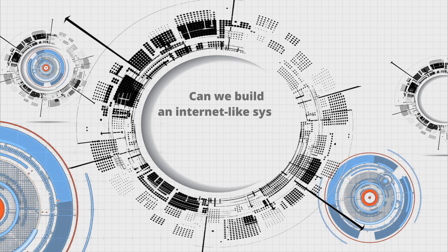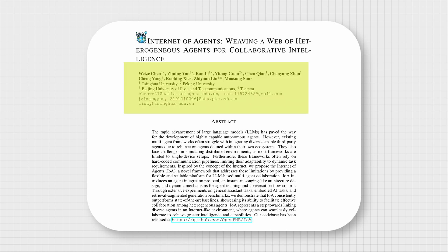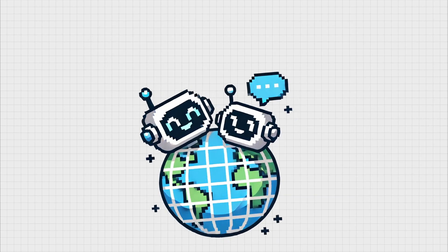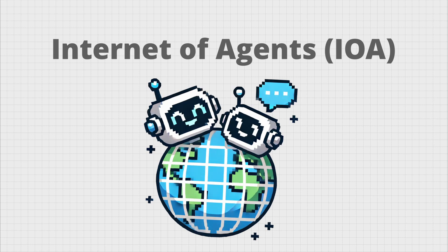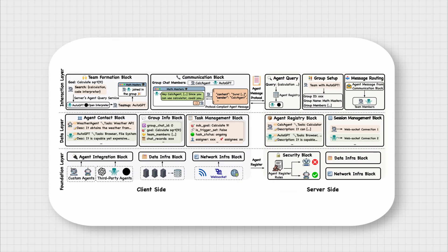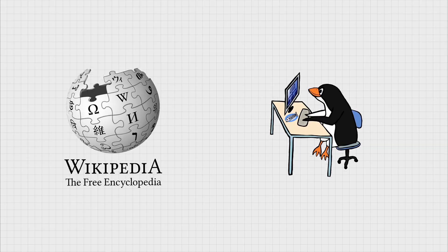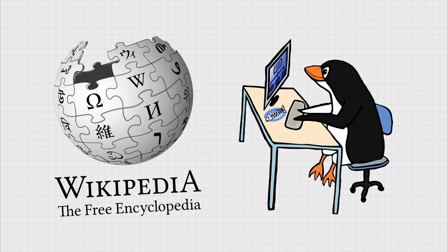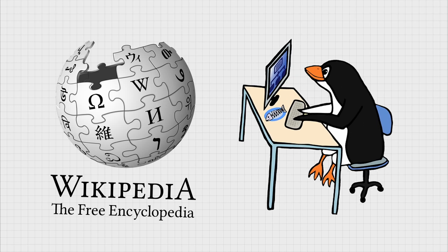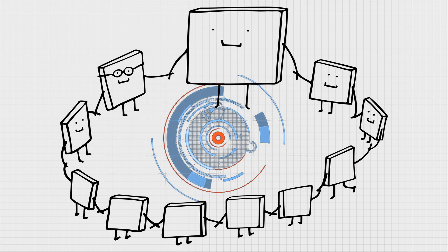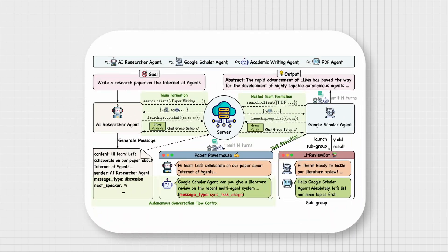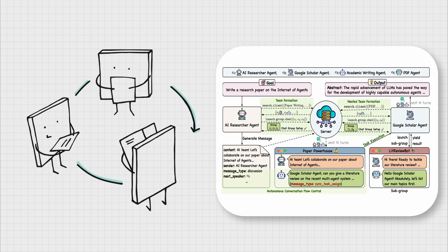Can we build an internet-like system for autonomous agents? This was a question in the minds of researchers at Beijing University who have built the Internet of Agents, or IOA system for large language models, inspired by how the internet works — more specifically, decentralized collaborative projects such as Wikipedia and Linux. Just like how the internet connects people, a system like IOA can connect different AI agents across different environments where agents can form teams and sub-teams on their own and adapt to complex tasks.